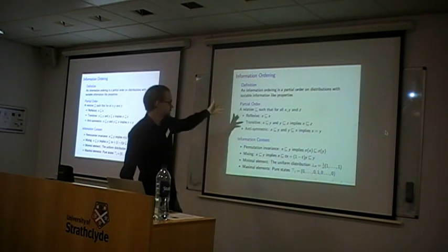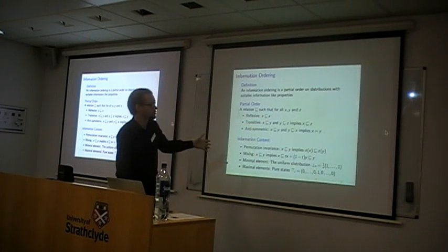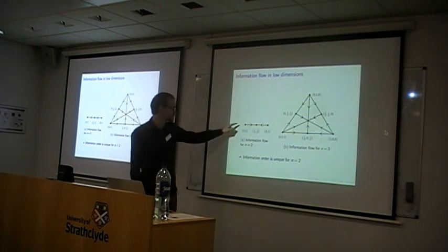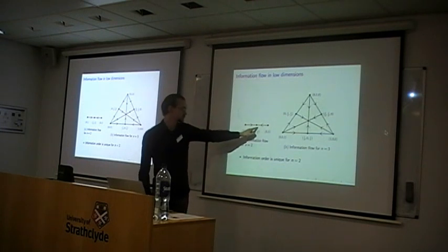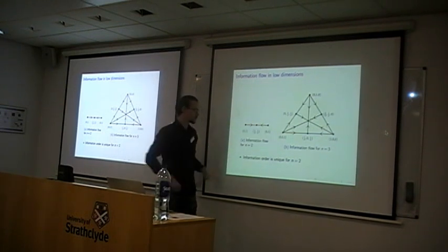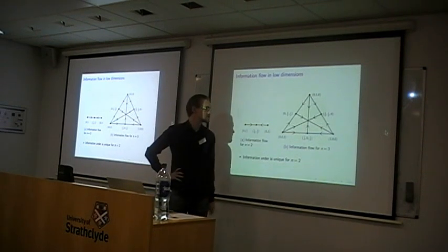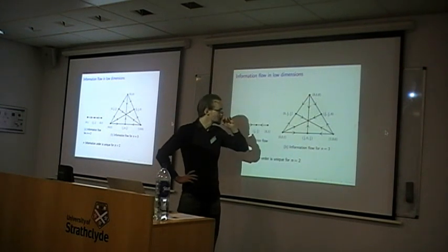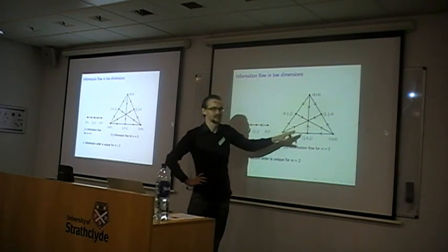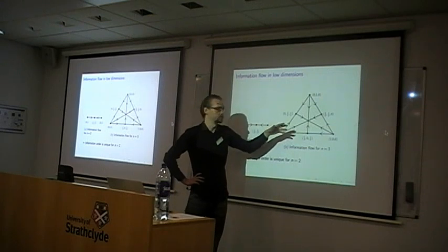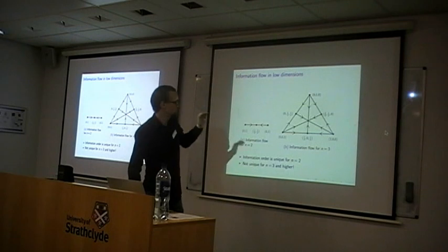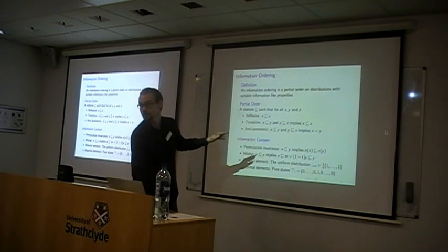Now you can ask: if you have these properties on probability distributions, what kind of partial orders can you get? It turns out that if you are working on the simplest space — the space with two points — this gives you a unique partial order where the maximum elements are on the outside, the minimum element is in the middle, and it flows in that direction. So it's unique for NS2, but if you go to NS3, you might ask if it's still unique because you have a larger space. It turns out that the structure that is fixed gives you a few sectors, but you will not get a unique partial order.